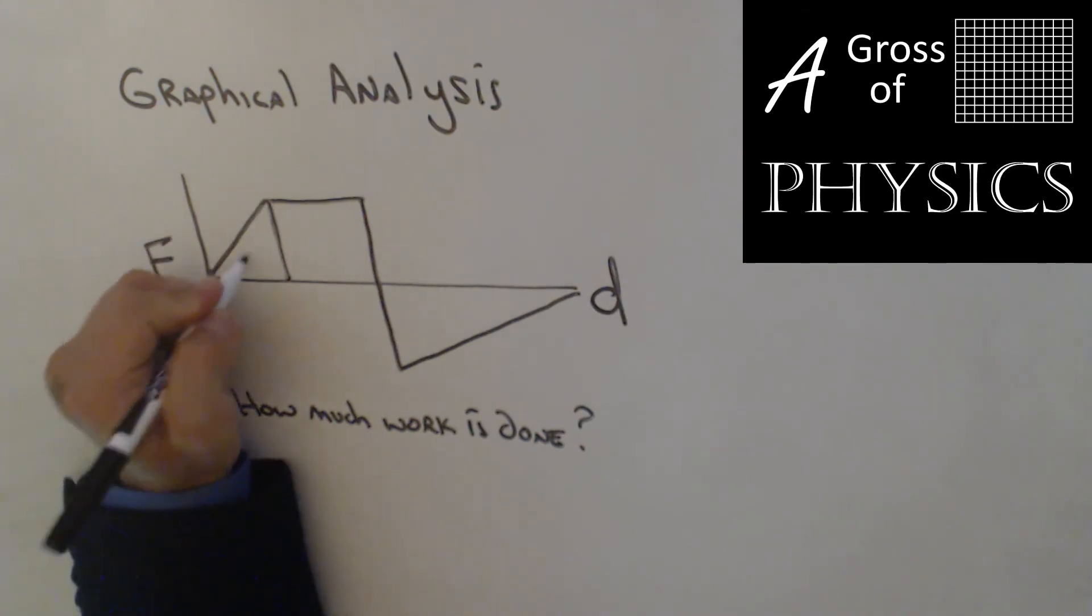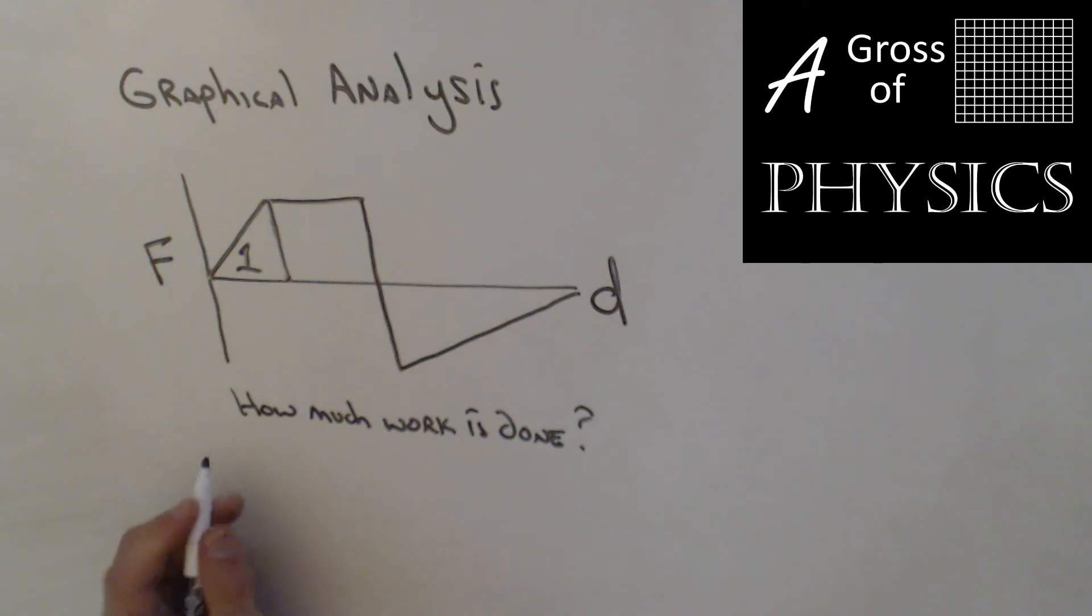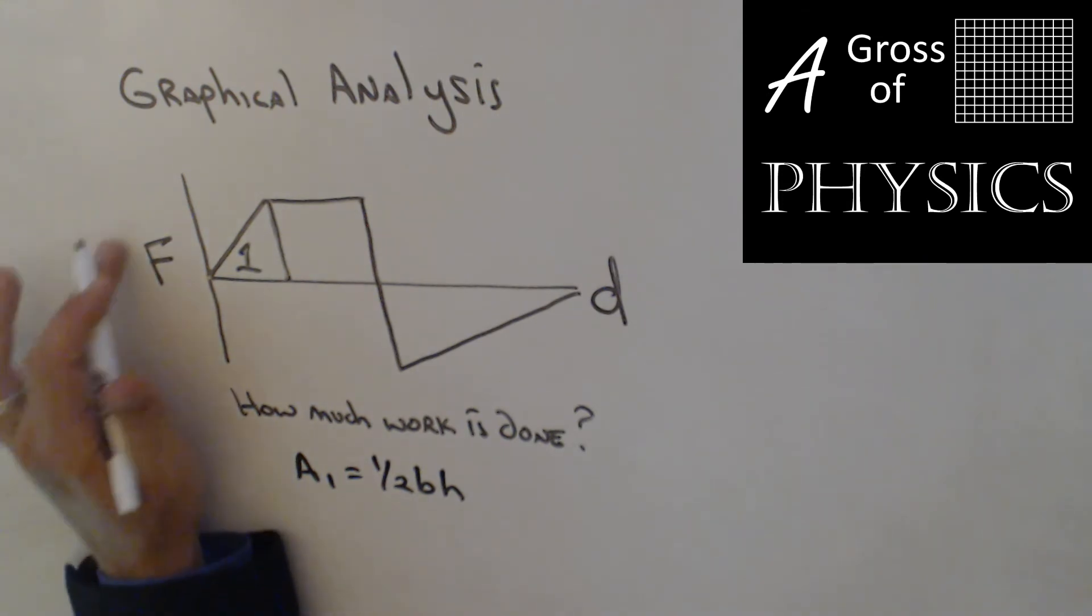That being said, the area under all of these pieces of the graph are where we have areas. So for example, this section, we'll call it section one, you would need to find the area using the area of a triangle. So area one would be one half base times height. Now you'd have to read the numbers from the graph. And I tried to simulate the graph that you have in your example problem.